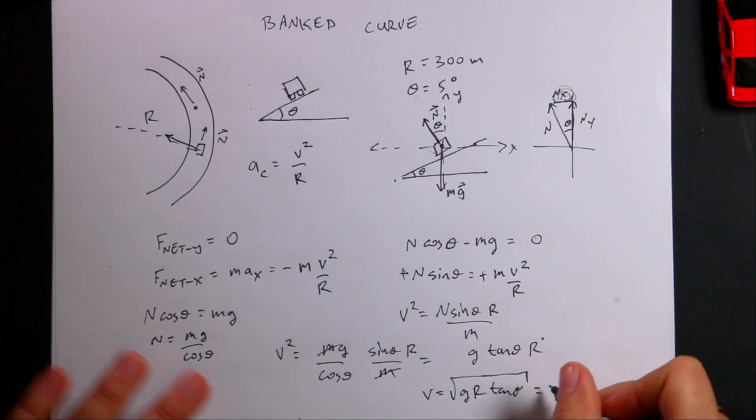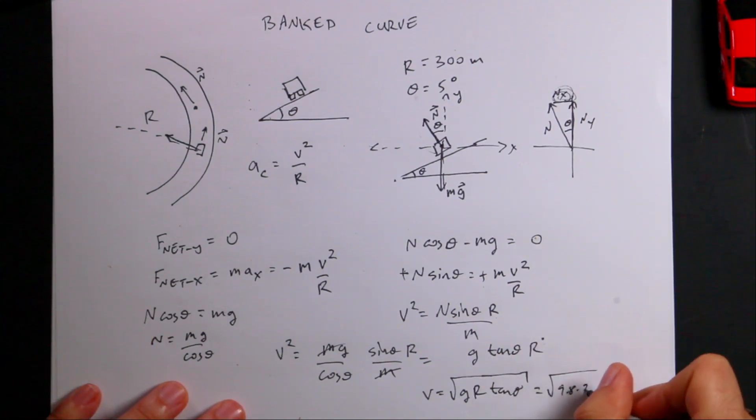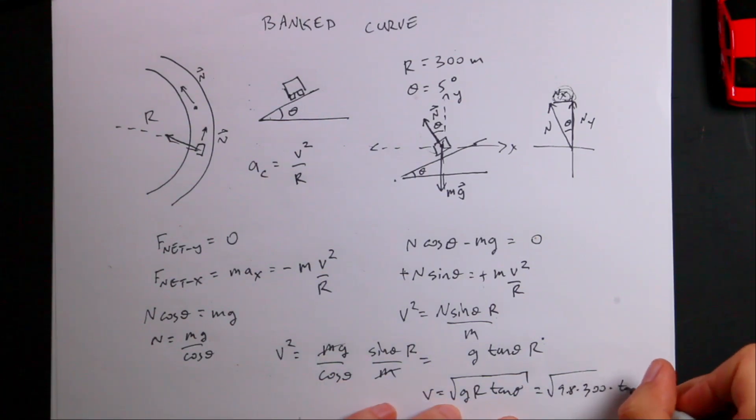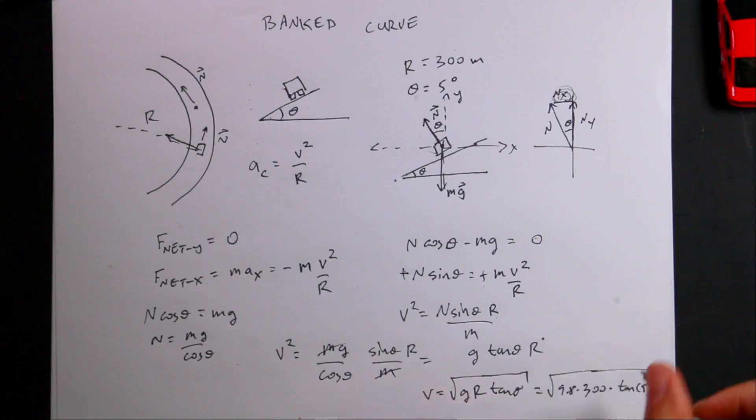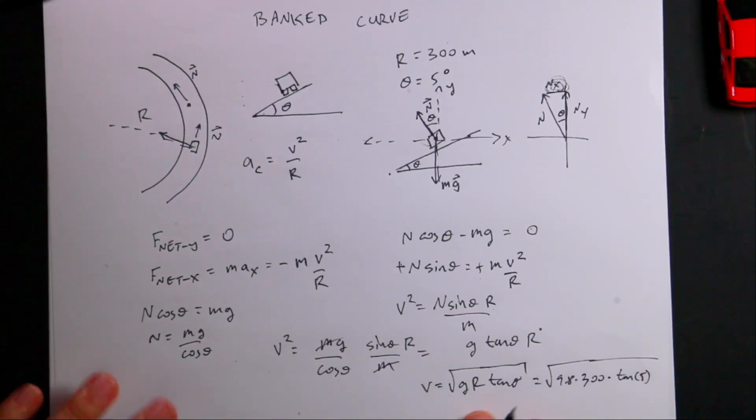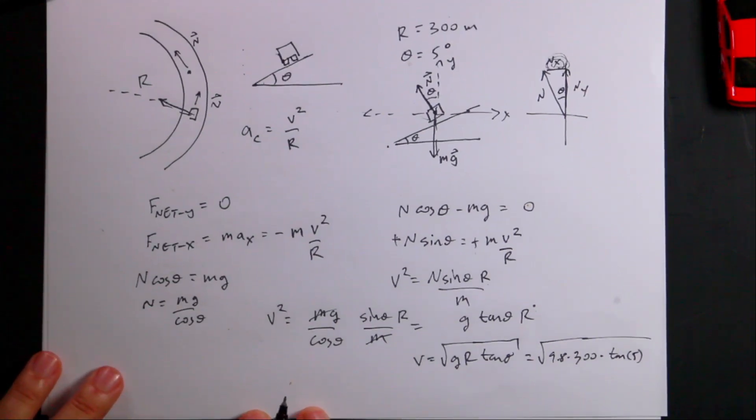Now let's put in my values: square root of 9.8 times 300 times the tangent of 5. But let's check real quick. This is going to be meters per second squared, and then r is in meters, so I get meters squared per second squared. Tangent theta is a ratio, it has no units. So I get meters squared per second squared. Take the square root, I do get meters per second, which is a velocity.